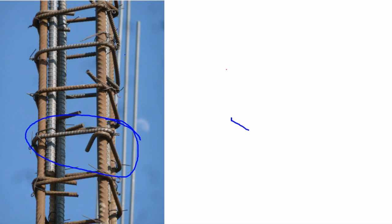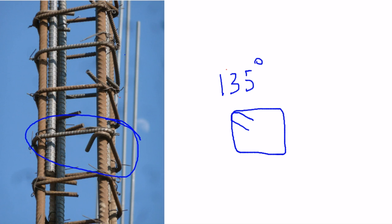This photograph shows an example of a well-constructed tie column, and you can see a typical tie within it. Here is an example of a detail showing how a tie should be anchored and bent — it is like a loop with a 135 degree angle, which prevents opening of the ties in case of an earthquake and loss of capacity and strength in a tie column.